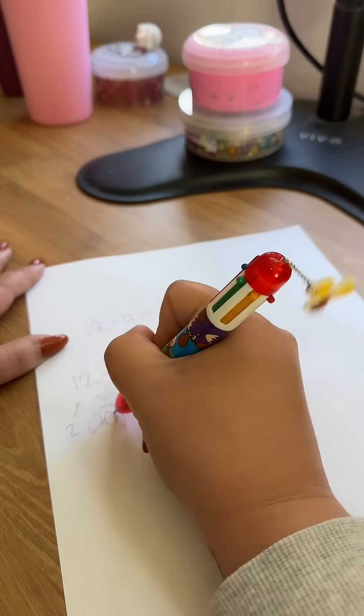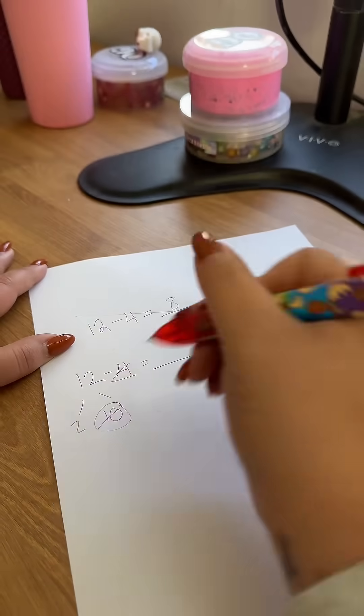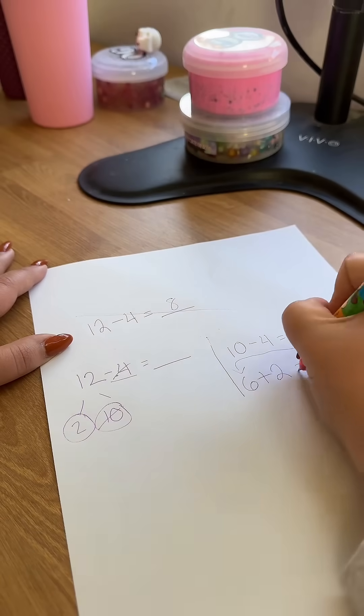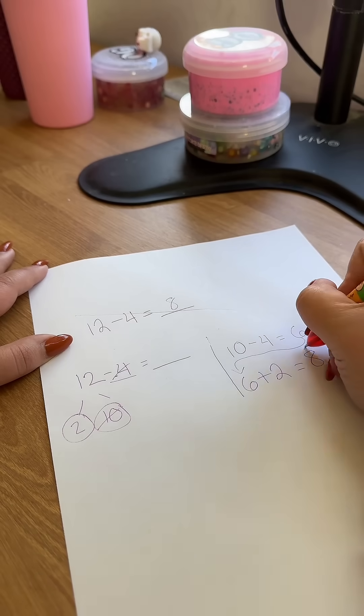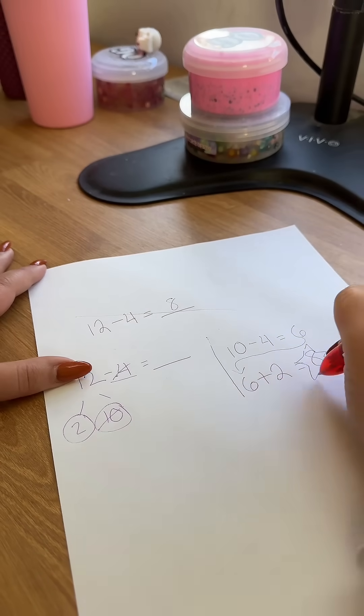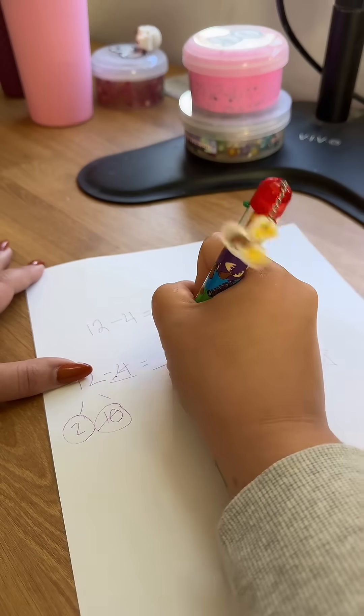We've already used our 10. We've already used our 4. The only number left here is a 2. So now we have 6 plus 2 equals 8, which ends up being our magic number to our original problem.